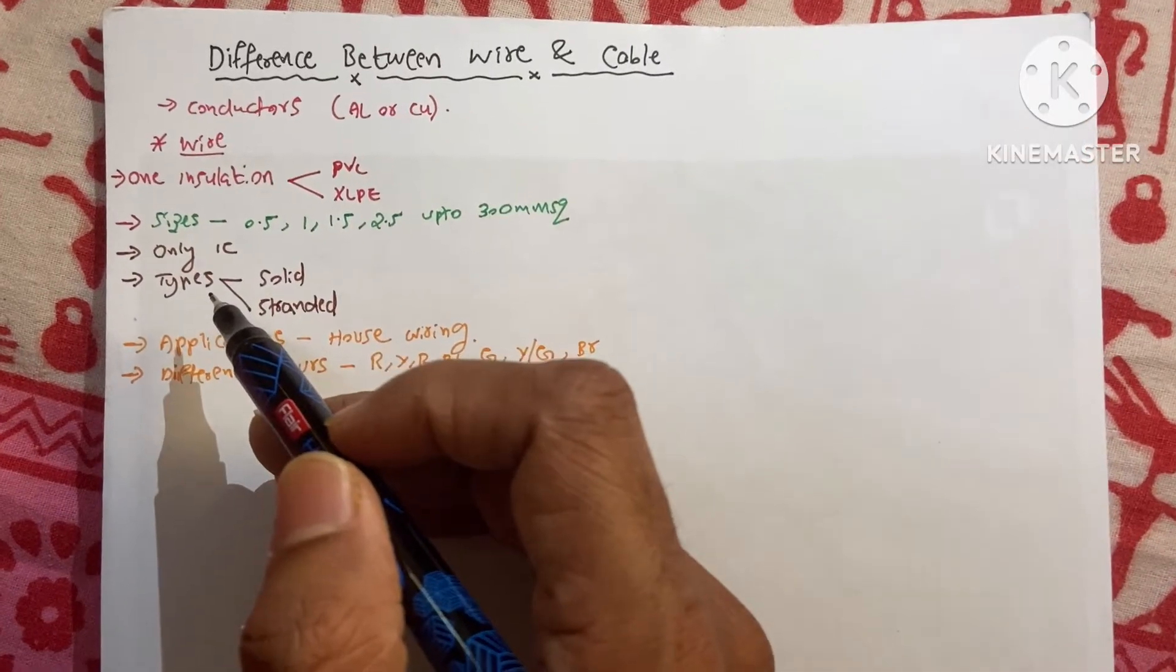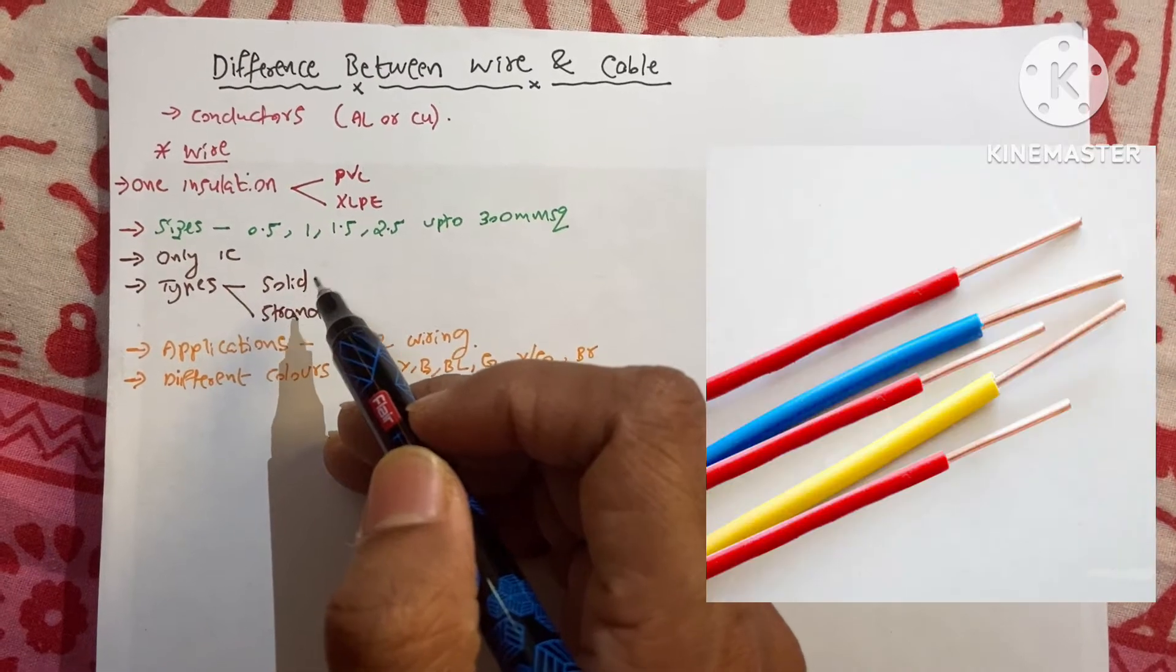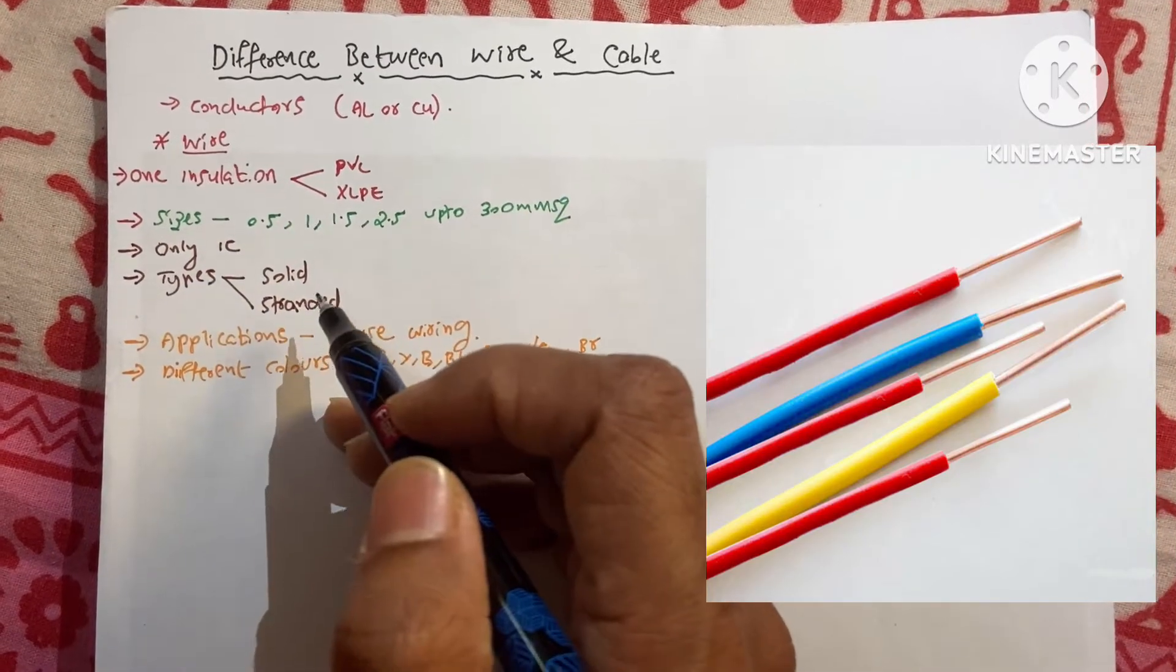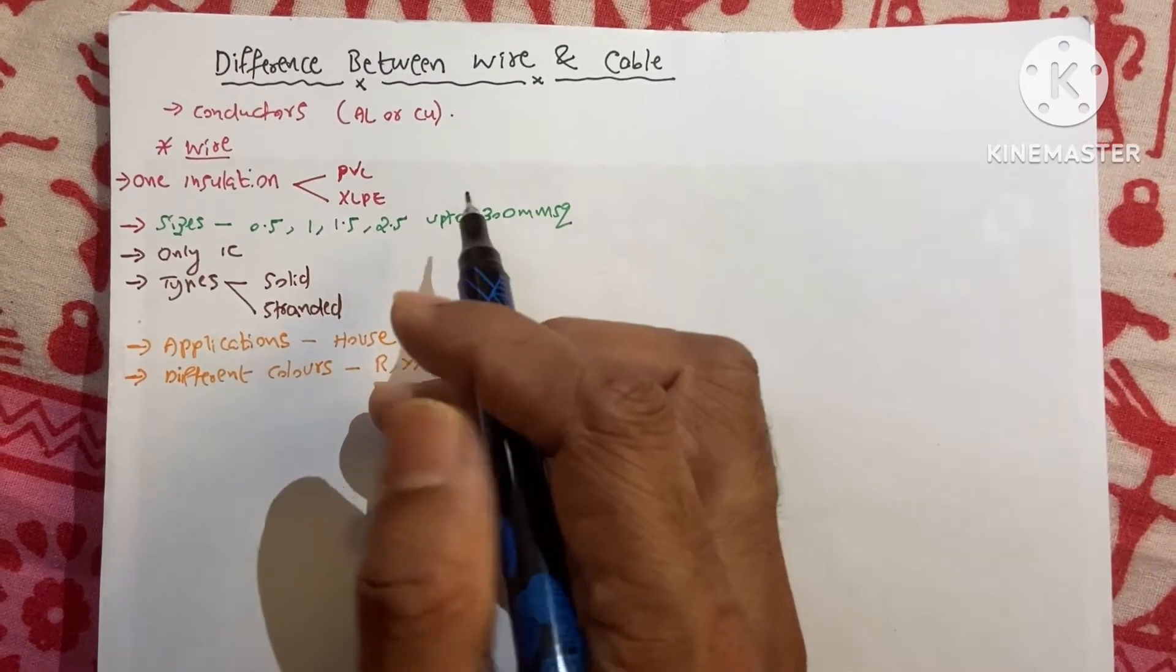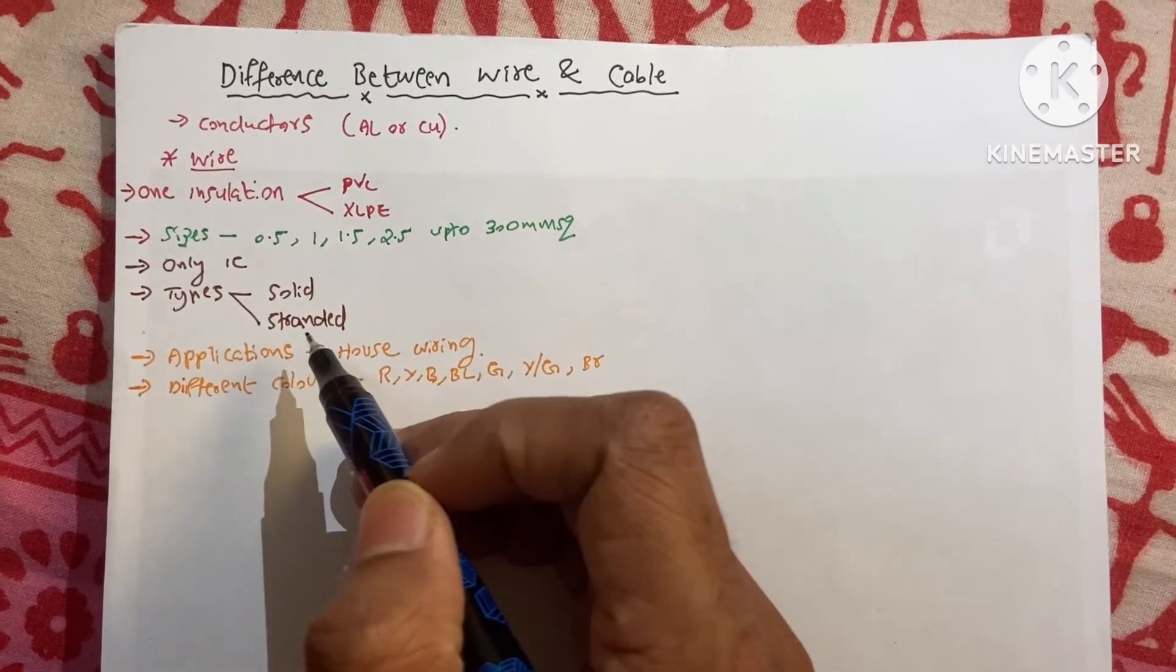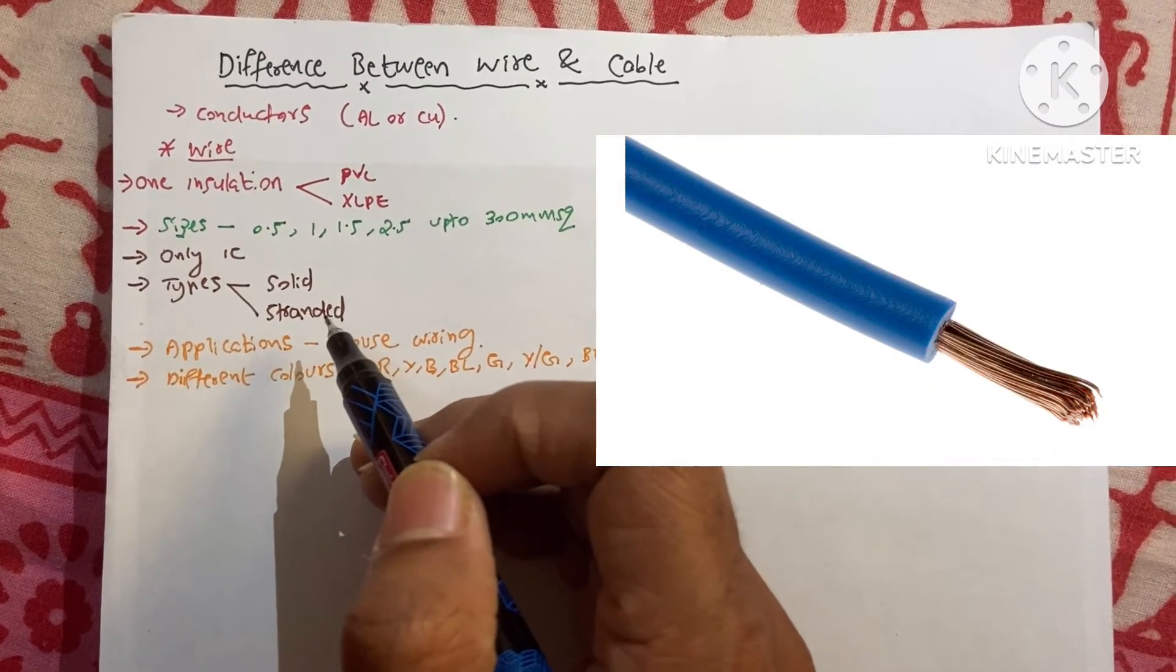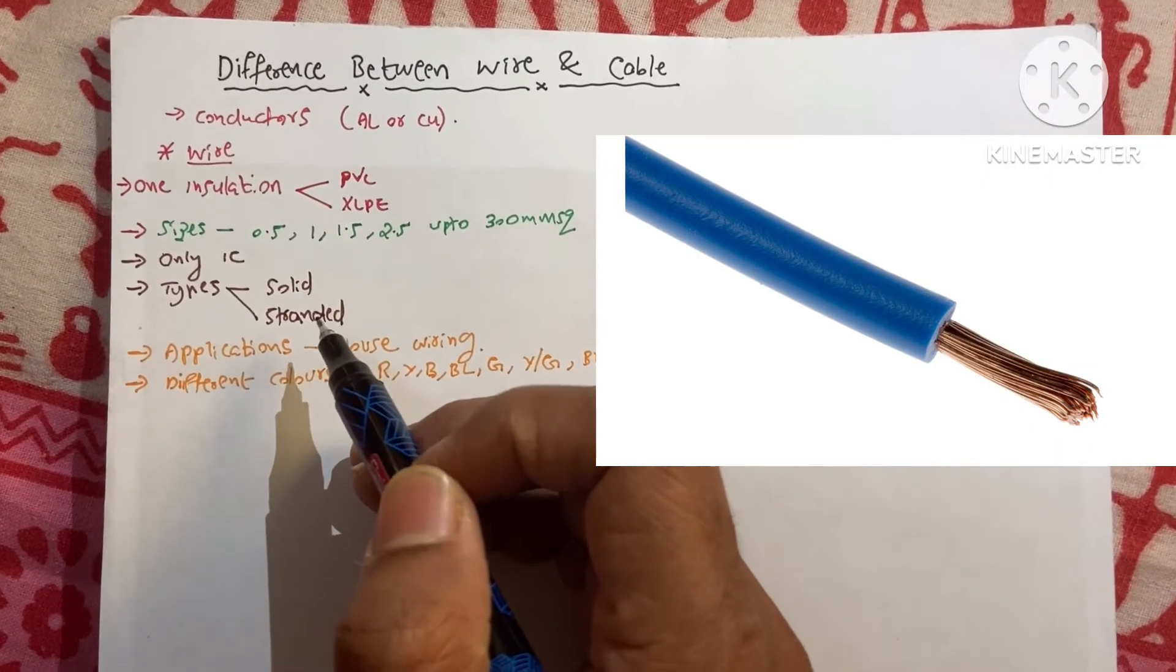And the types are solid and stranded. The solid conductor means inside the insulation we can see only one conductor, a solid conductor. The next is stranded one. Many small number of wires are twisted together and make it a form.